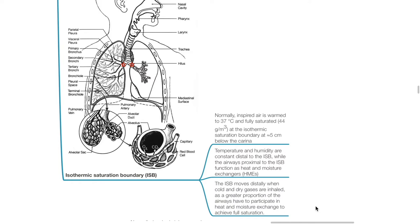The isothermic saturation boundary (ISB). Normally inspired air is warmed to 37°C and fully saturated at the isothermic saturation boundary, which is about 5 cm below the carina. Temperature and humidity are constant distal to the ISB, while the airways proximal to the ISB function as heat and moisture exchangers. The isothermic saturation boundary moves distally when cold and dry gases are inhaled, as a greater proportion of the airways have to participate in heat and moisture exchange to achieve full saturation.